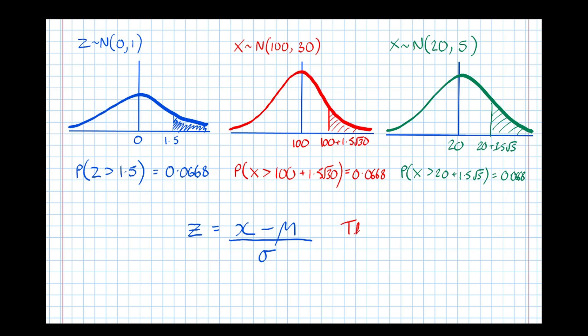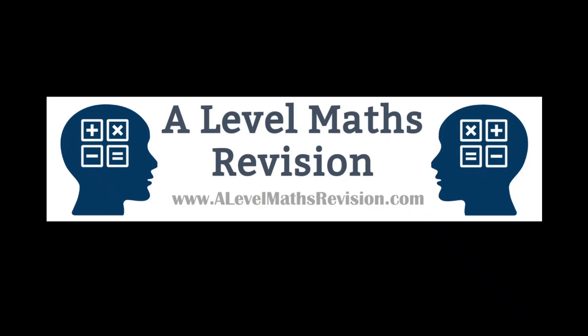So this formula gives us the number of standard deviations away from the mean. As mentioned, this is something that links all normal distributions together — it's the measure that stays constant throughout all normal distributions. We measure everything in number of standard deviations away from the mean. For more videos like this, go to 11mathsrevision.com or subscribe to our YouTube channel.